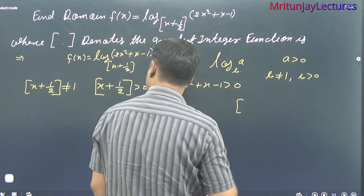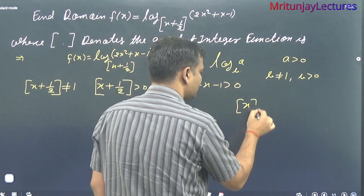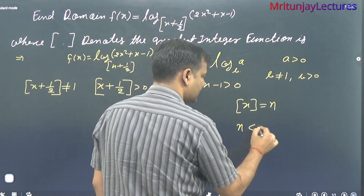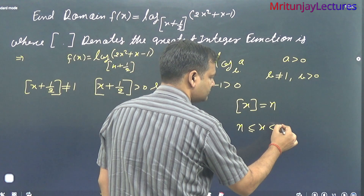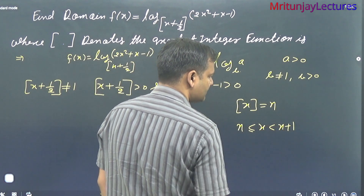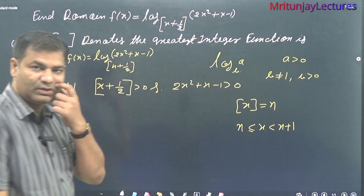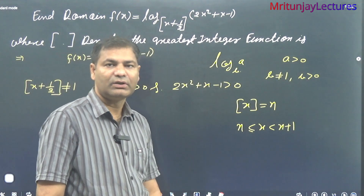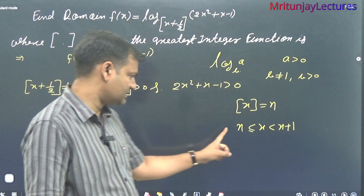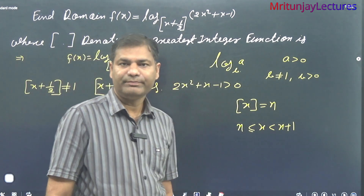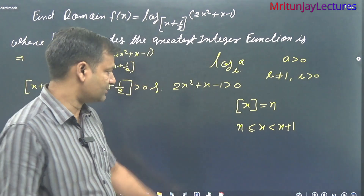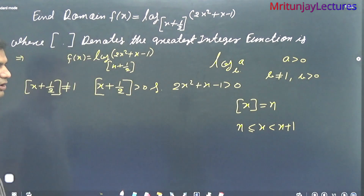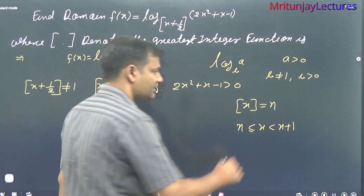For the greatest integer function: [x] equals n, where n is an integer, when x lies between n and n+1. For example, 5.1 lies between 5 and 6, so [5.1] = 5. The greatest integer function always gives an integer.